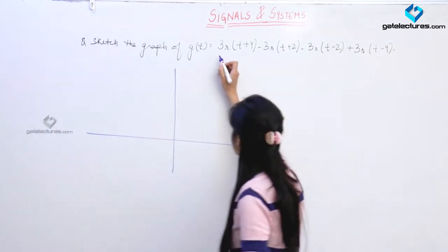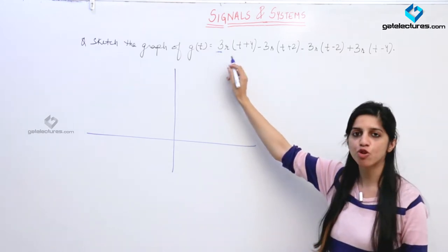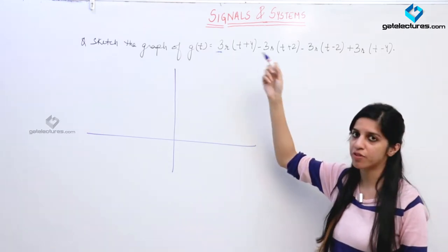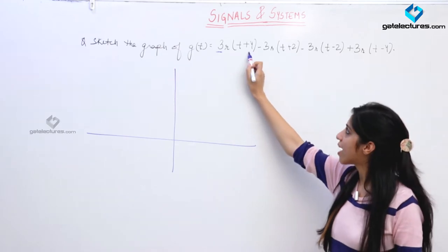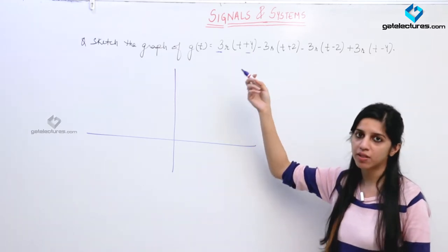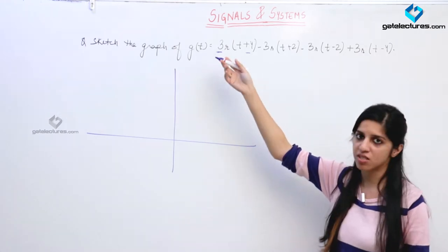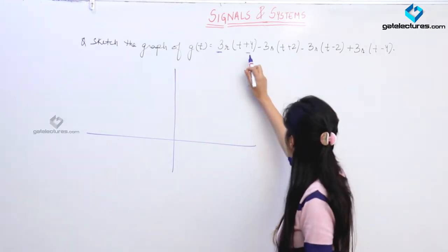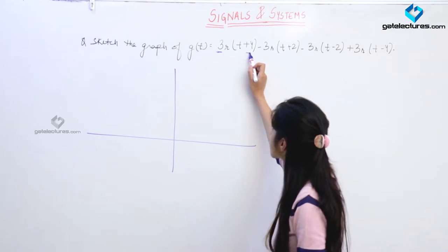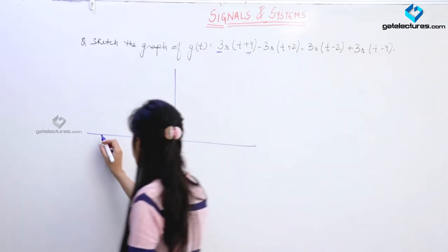As we know, the coefficient of the ramp signal signifies the slope of the graph — the slope of the straight line — and this shift in the signal signifies the point where this change in slope is going to happen. So the first instant where the slope is changing is at T equal to minus 4.